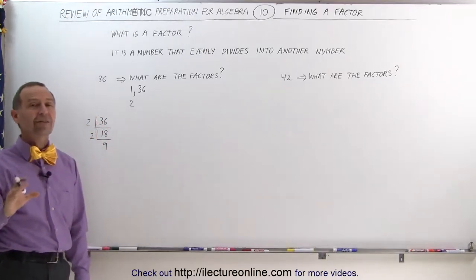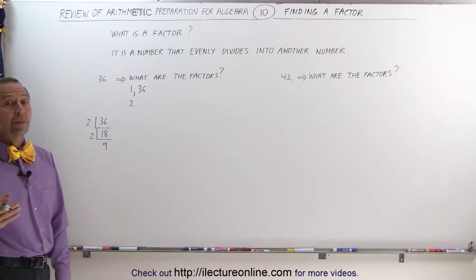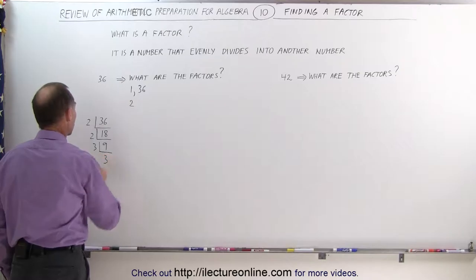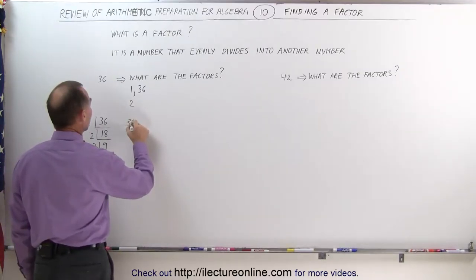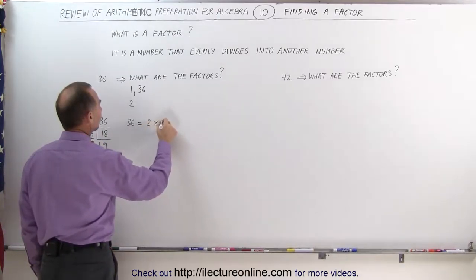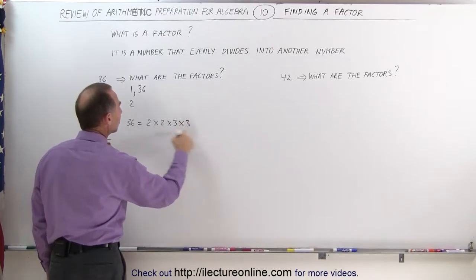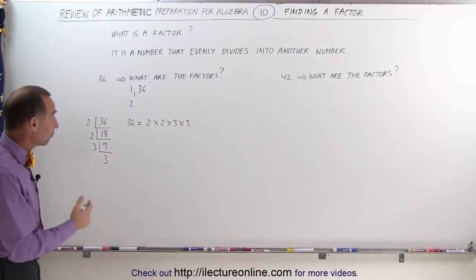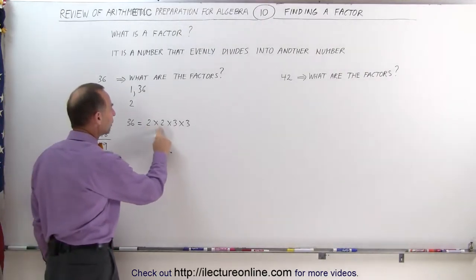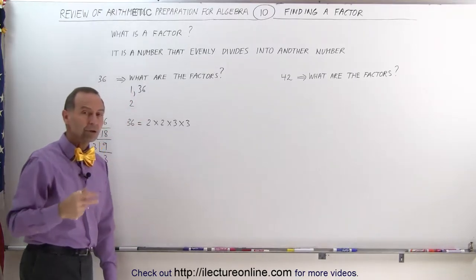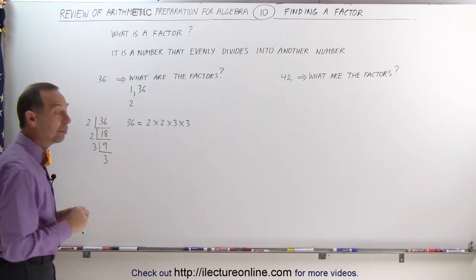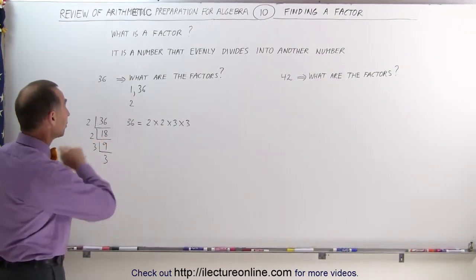Now, 9 is no longer even, so we cannot divide it by 2. The next smallest prime number would be 3. That means we can divide 9 by 3. When we do that, we get 3, which means that 36 can be written as the product of all these factors. 2 times 2 times 3 times 3, and you can see that the factor 2 repeats. You have two of them. The factor 3 also repeats.